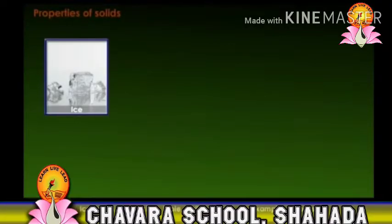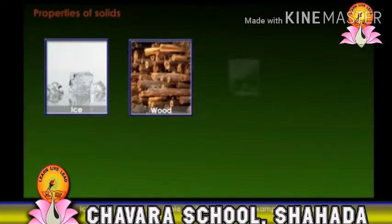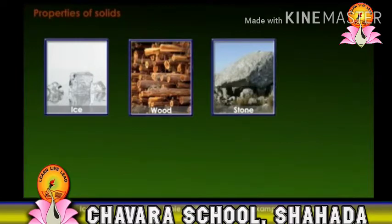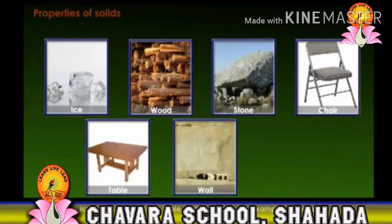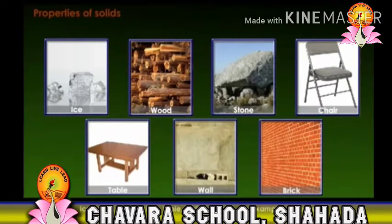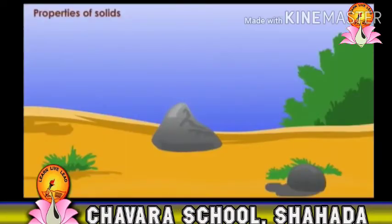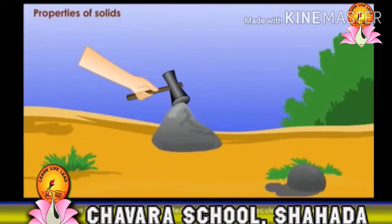Examples of solid: ice, wood, stone, chair, table, wall, brick. These are the examples of solid. Solids are hard, strong, and rigid materials because the molecules are tightly packed.